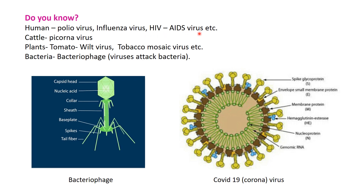HIV, that is AIDS virus - acquired immunodeficiency syndrome - is caused by a virus. For AIDS there is no remedy; only medicines can be given to increase the lifespan, but a proper remedy is not available. In cattle, picornavirus causes disease. In plants, tomato wilt virus and in tobacco, tobacco mosaic virus are some examples of plant diseases caused by viruses. Even viruses cause disease to bacteria, and that virus is called bacteriophage - meaning viruses that attack bacteria.